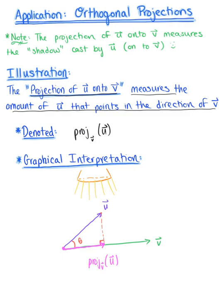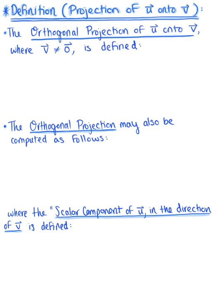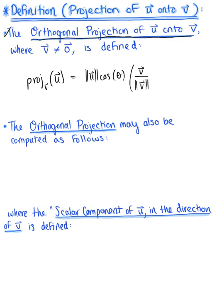Let's think about this in a more formal sense. Here is our formal definition of a projection of vector u onto vector v. The orthogonal projection of vector u onto vector v, where vector v does not equal the zero vector, is defined as follows: the projection of vector u onto vector v is equal to the magnitude of vector u multiplied by cosine of theta, multiplied by vector v, divided by the magnitude of vector v.